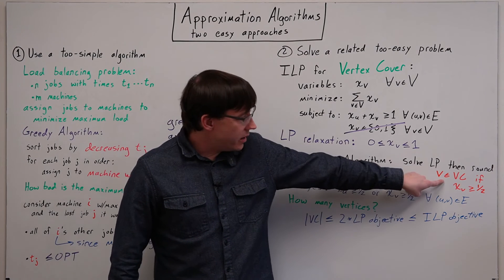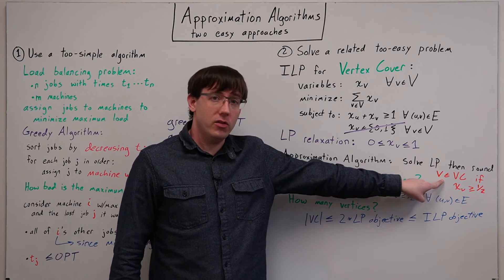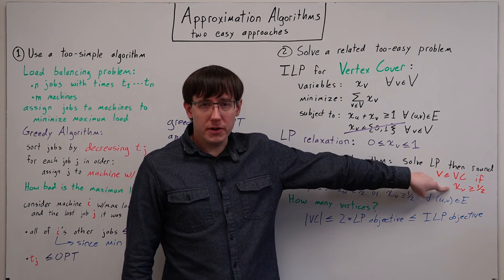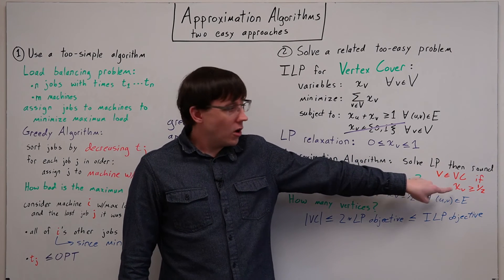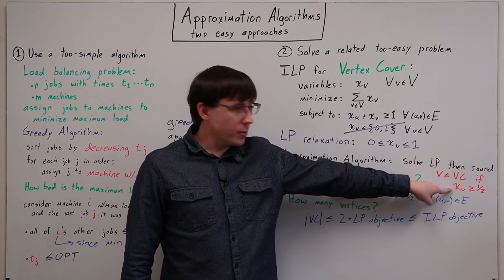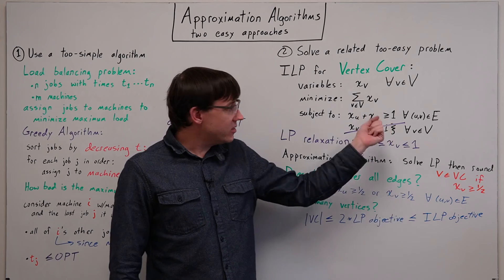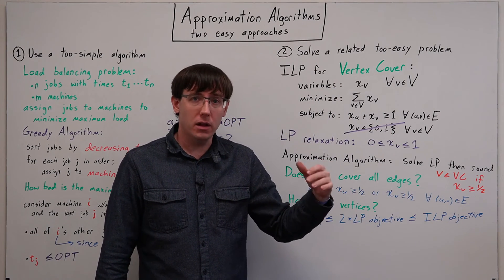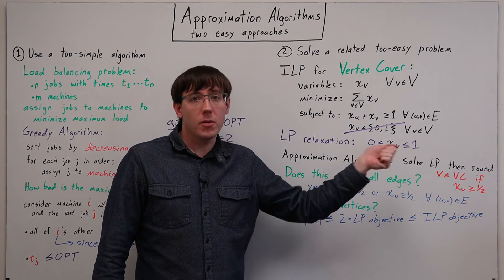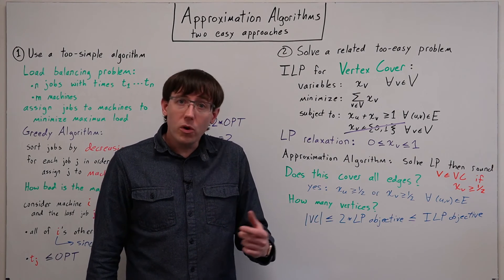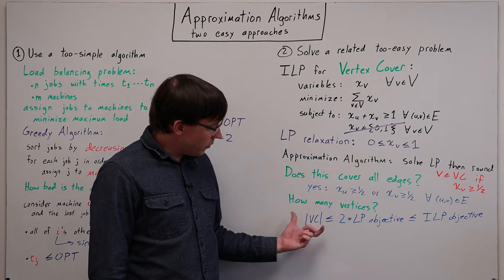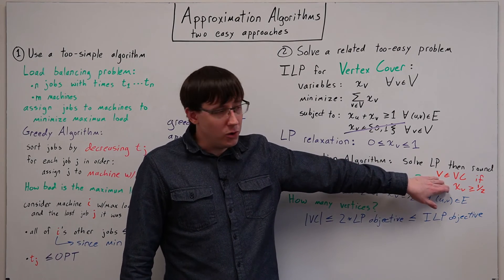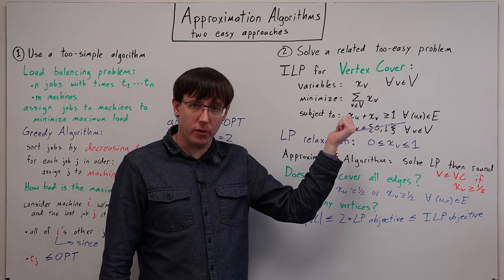If we think about the number of vertices in the vertex cover: since we rounded all of the variables, that means only variables that had a value of at least a half when we solved the linear program will get a value of one from the rounding. So the worst-case number of vertices will result from all of the variables coming out to a half when we solved the linear program.